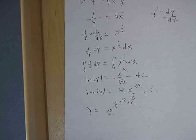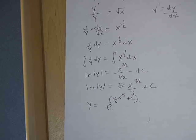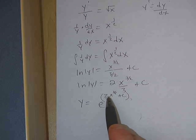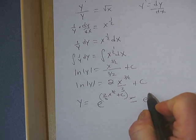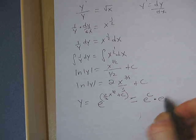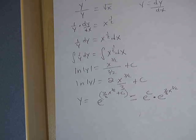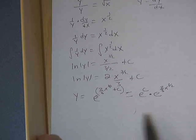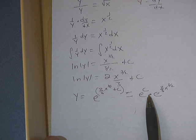That's quite the exponent: e to the 2/3 x to the 3/2 plus c. This is all the exponent. Now here's the tricky move. I'm going to rewrite the right side as e to the c times e to the 2/3 x to the 3/2. The reason I can do that is if I have the same base.